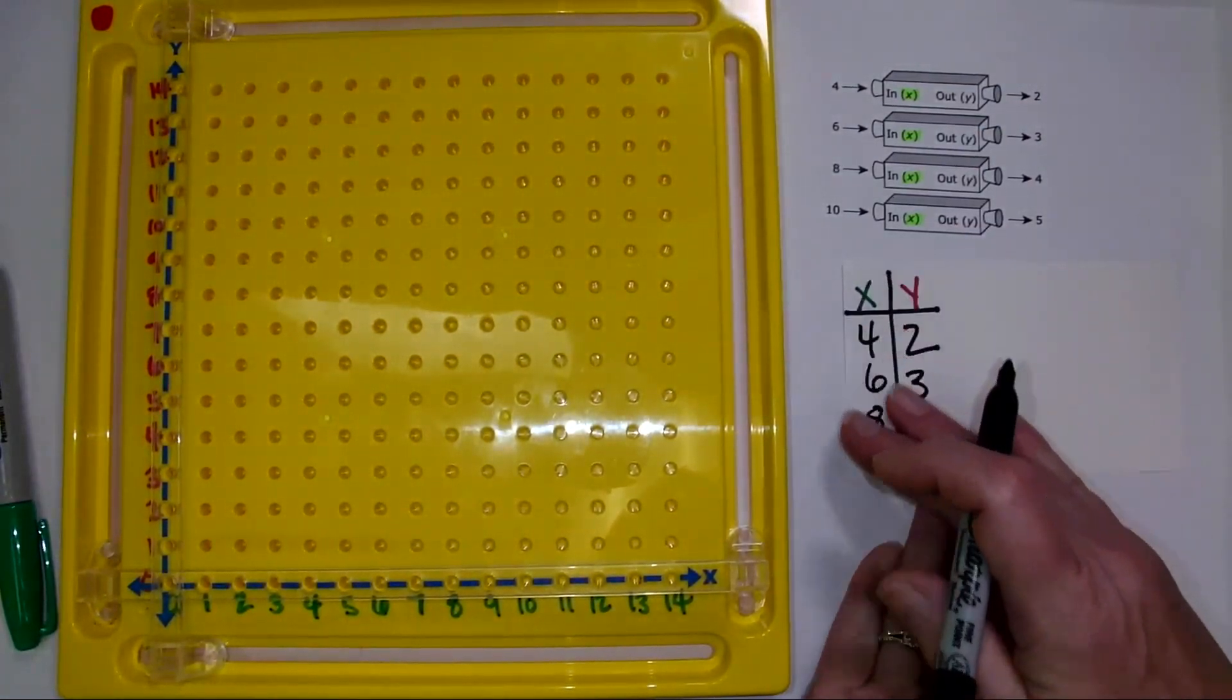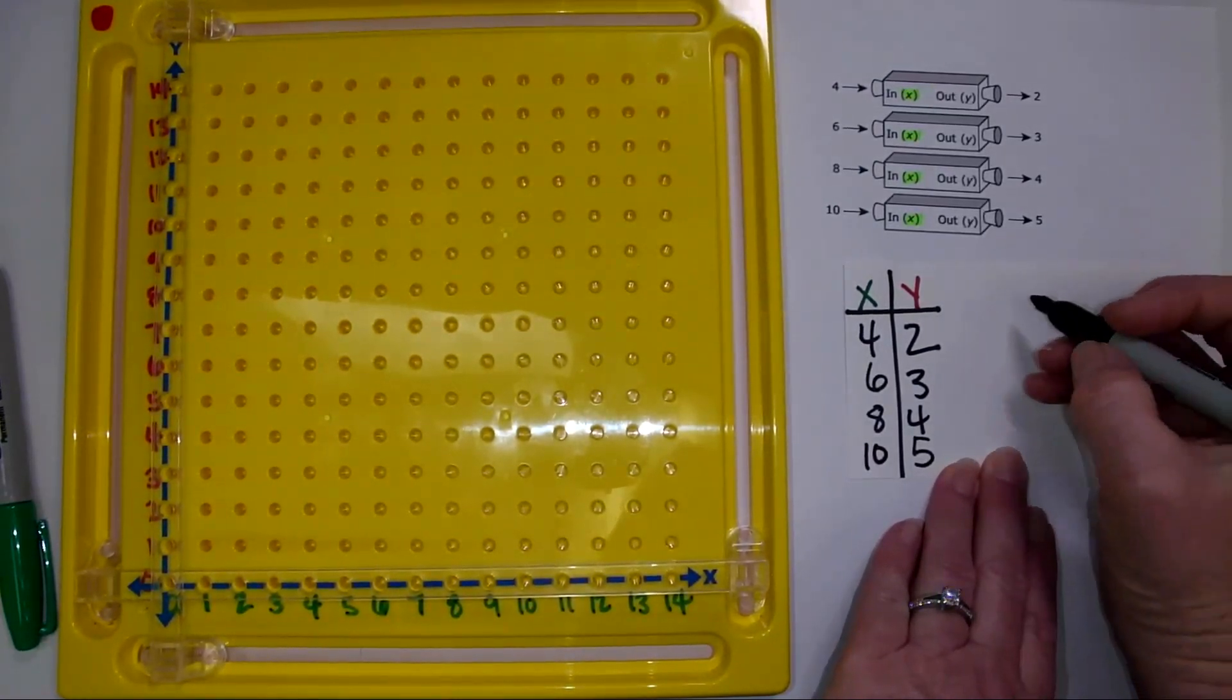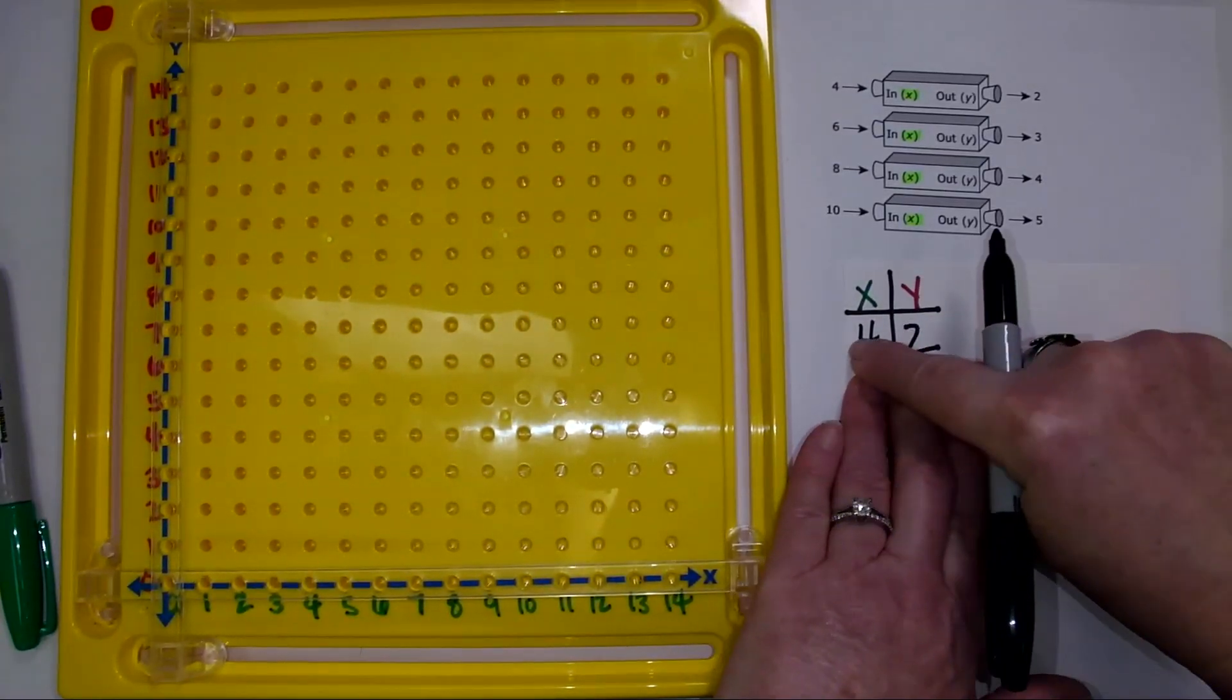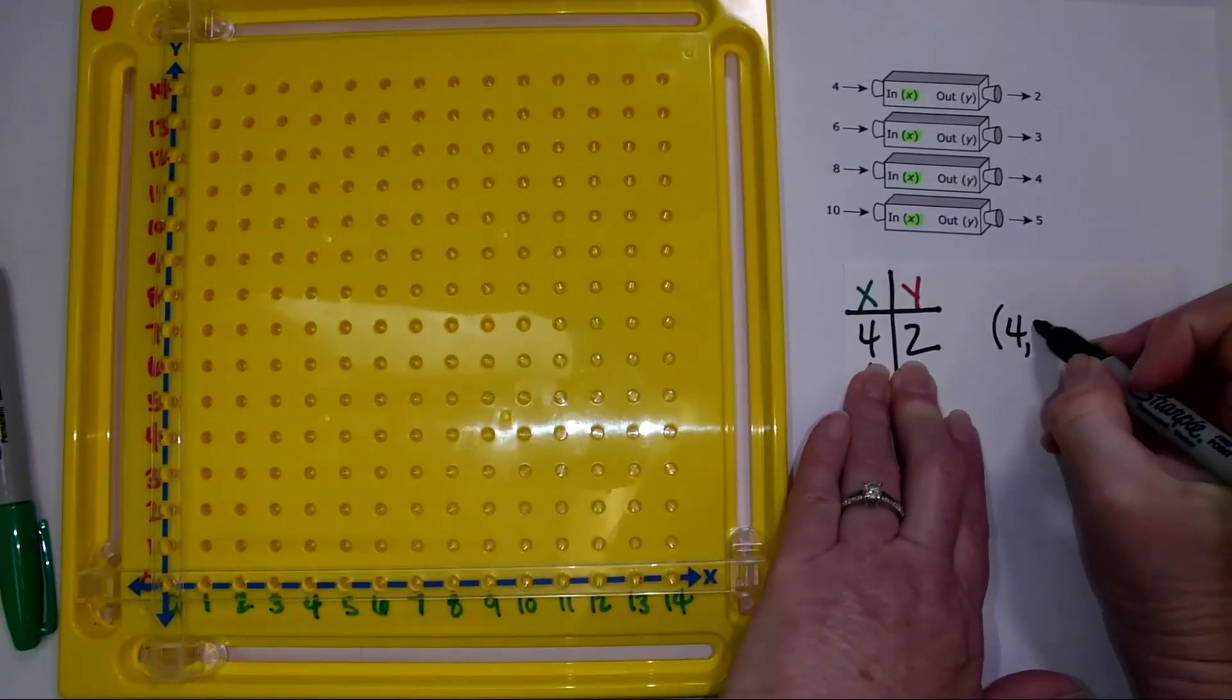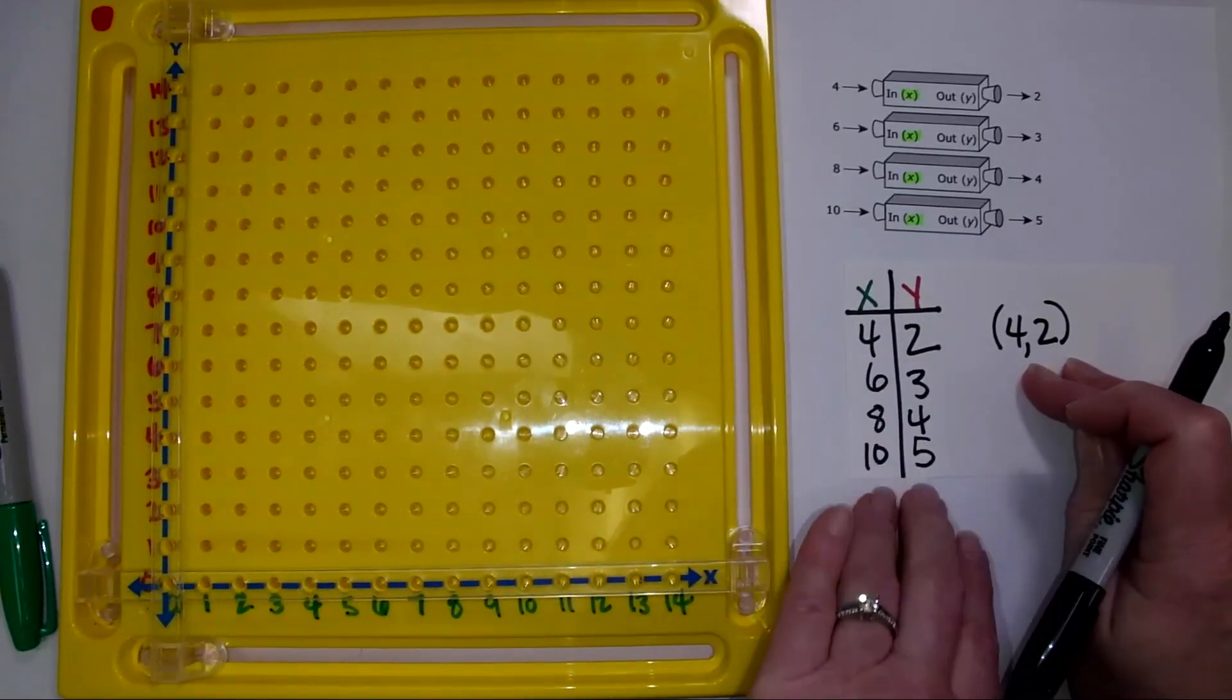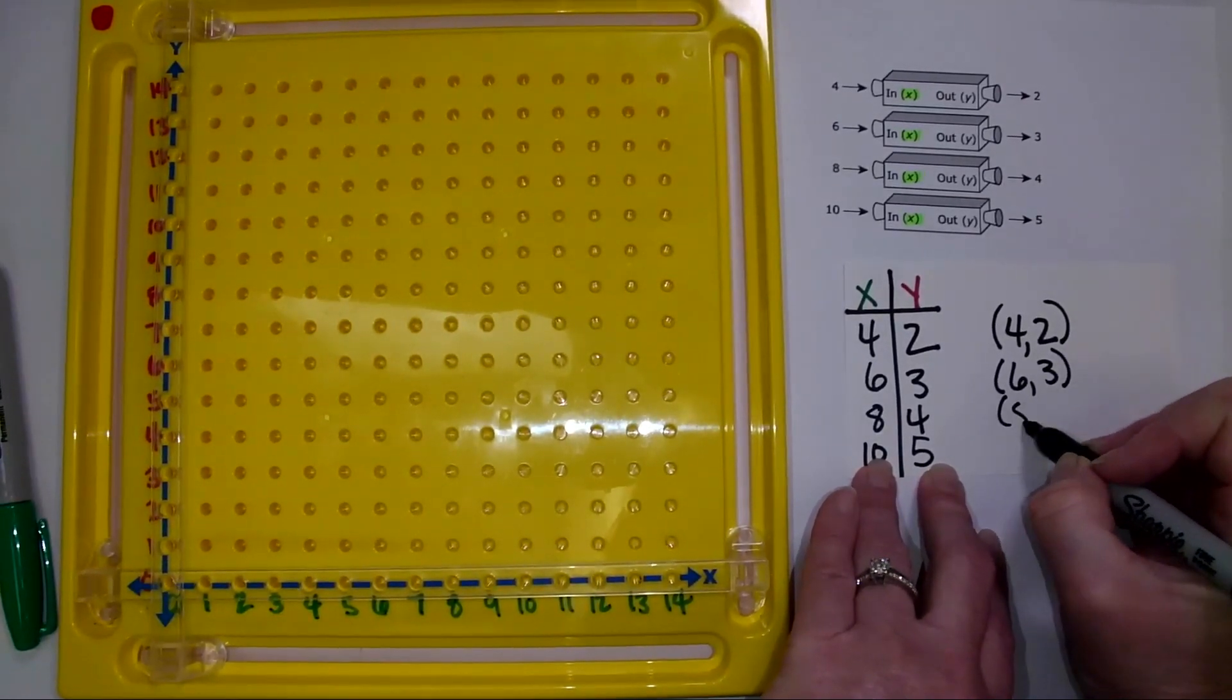I want my kids to practice. They've done this input-output table, but I also want them to write it in standard notation for an ordered pair. So we've got them already in the right order because the x is first and then the y. I just want them practicing writing it in the notation. I might write the first one for them and ask them, can you do the others? And then they have this model and they're just getting this extra practice.